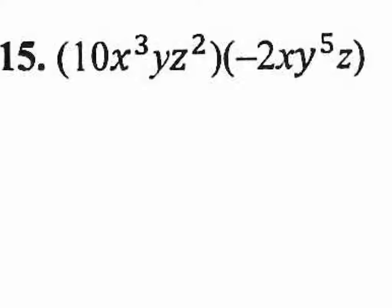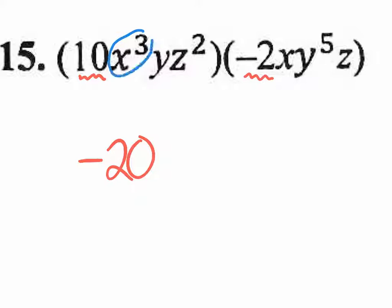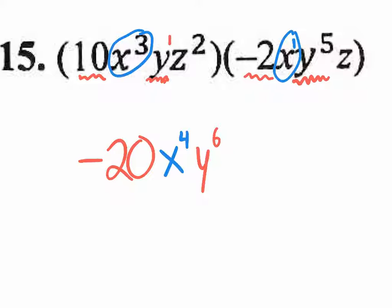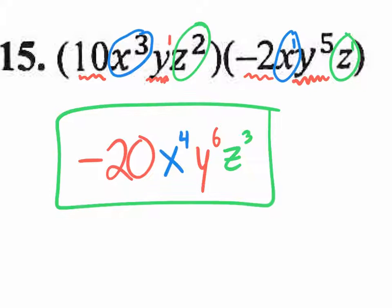Number 15 — the final odd question on the front side. Start with the coefficients: 10 times negative 2 is negative 20. For the X's: X to the third times X to the 1 gives X to the fourth. For the Y's: Y to the 1 times Y to the fifth gives Y to the sixth. For the Z's: Z squared times Z to the 1 gives Z to the third. The final answer is negative 20, X to the fourth, Y to the sixth, Z to the third.